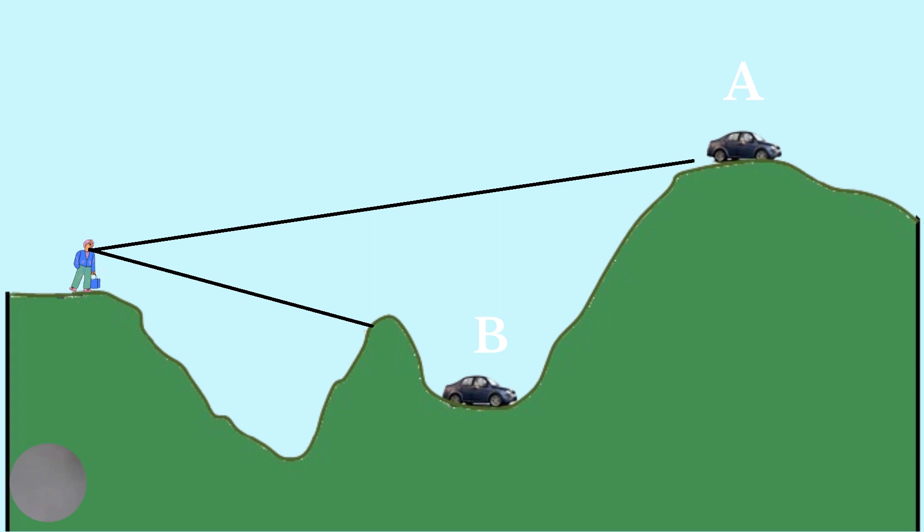So, the motor car at B is not visible from where the man is standing since there is a blocking feature. However, the motor car at A is inter-visible.